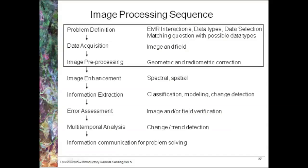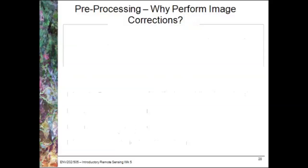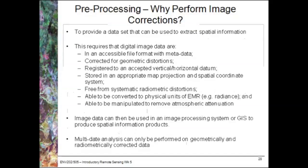We return again to the image processing sequence, and this time we're up to the image pre-processing step. We're going to consider here both geometric and radiometric correction. So first of all, why do we need to perform image corrections and what is actually involved in pre-processing?